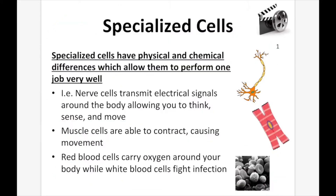Specialized cells have physical and chemical differences which allow them to perform one job very well. For instance, nerve cells transmit electrical signals around the body allowing you to think, sense, and move. Muscle cells are able to contract, causing movement. Red blood cells carry oxygen around your body while white blood cells fight infection. Each cell, even though it has the same genetic makeup, performs a specific body function based on its structure. You can see that the nerve structure looks very different from the muscle cell structure, which is very different from the red blood cell structure.